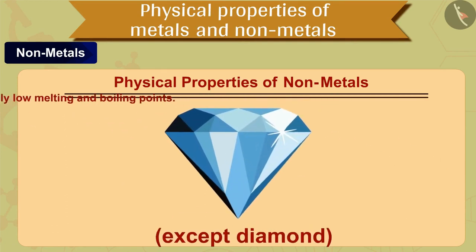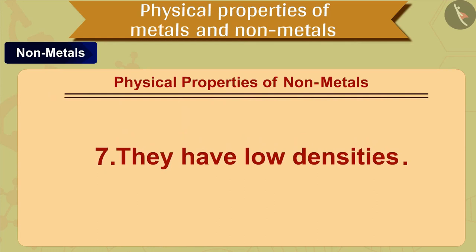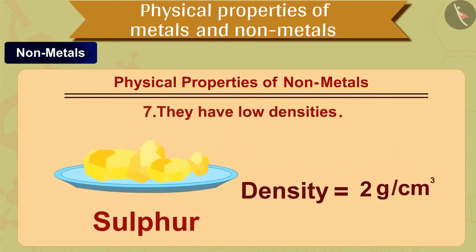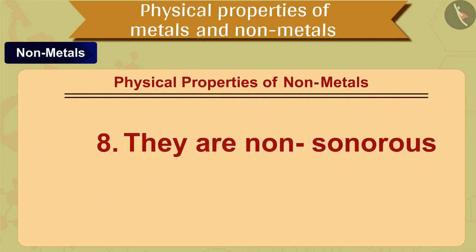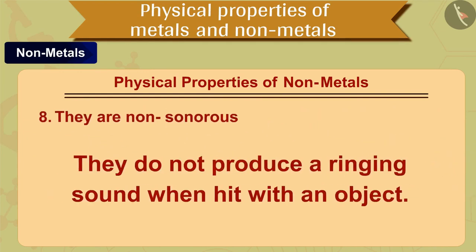The seventh property of non-metals is that they have low densities. That is, they are light substances. For example, sulfur has a density of 2 grams per centimeter cube. The eighth property of non-metals is that they are non-sonorous. That is, they do not produce a ringing sound when hit with an object.